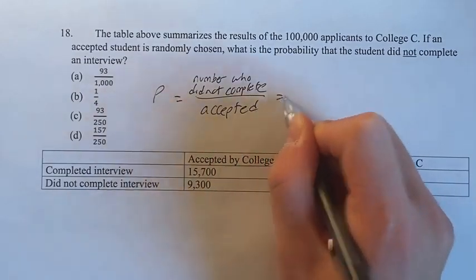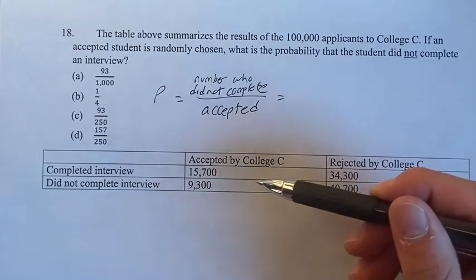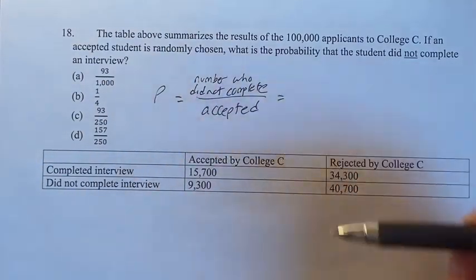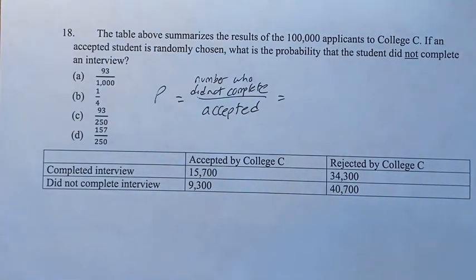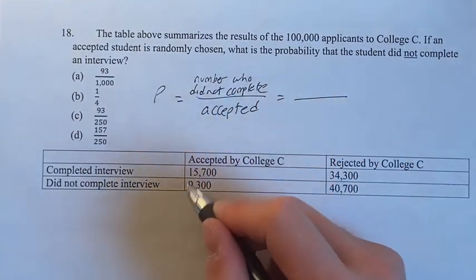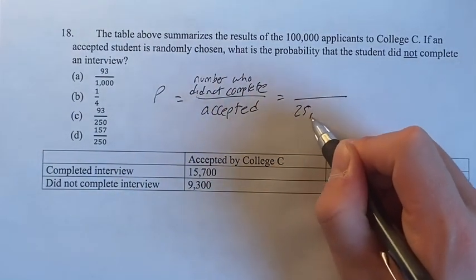So first, what is the total number that were accepted? Well, if we look, this column is the people who were accepted by college C. So the total number is 15,700 plus 9,300. And if you add these two up, you get 25,000.